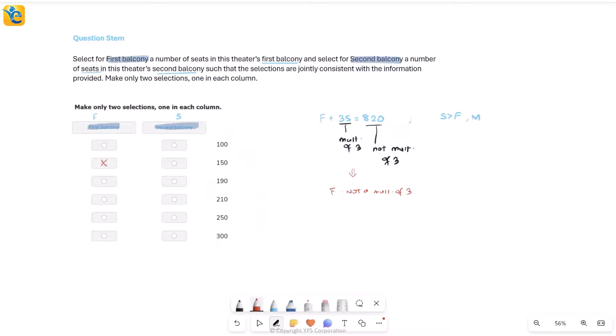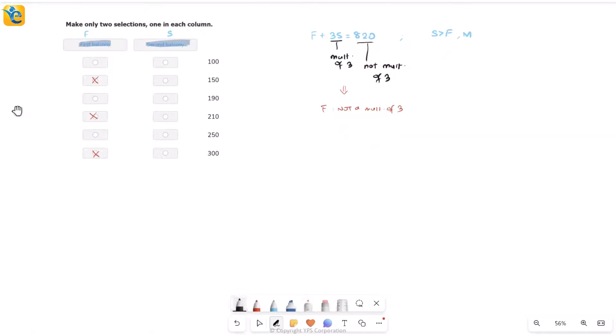This helps me reject values in the table. Look at all the choices: the multiples of 3, 150 is a multiple, f can't be that; 210 can't happen; 300 can't happen. Now we've narrowed down the possibilities of f to just three values. If I take f equal to 100, when I put this into my equation it gives me 100 + 3s = 820, so 3s = 720 and s = 240. That's not in the table, so it's nothing for me.